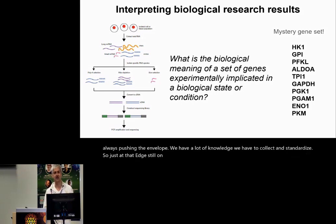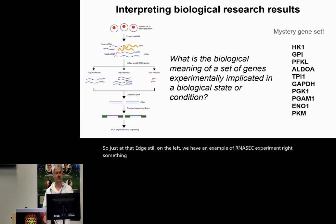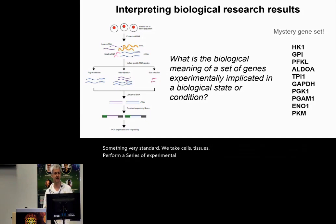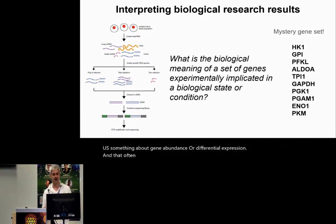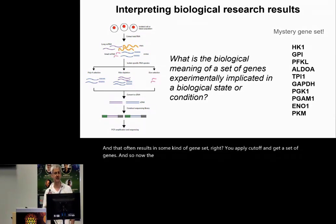On the left, we have an example of an RNA-seq experiment — something very standard. We take cells, tissues, perform a series of experimental steps, and then get a set of sequencing reads that tell us something about gene abundance or differential expression. That often results in some kind of gene set. You apply a cutoff and get a set of genes. The question is, what do those genes mean in this experimental context of a specific state or condition?